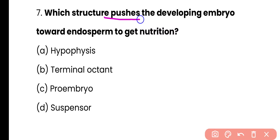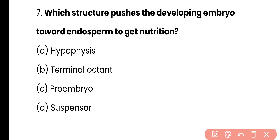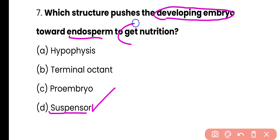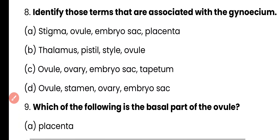Question number 7. Which structure pushes the developing embryo towards the endosperm to get nutrition? Hypothesis, terminal octant, pro-embryo, or suspensor? The correct answer is option D. The filament suspensor, formed by the division of suspensor cells, pushes the developing embryo towards the endosperm in order to get nutrition.